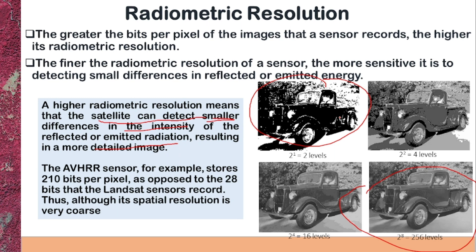The AVHRR sensor stores more bits per pixel compared to Landsat 8 sensors, so the radiometric resolution of AVHRR is higher than Landsat 8. AVHRR is able to discriminate very slight differences in emitted or reflected energy, representing radiations using 10 bits per pixel.